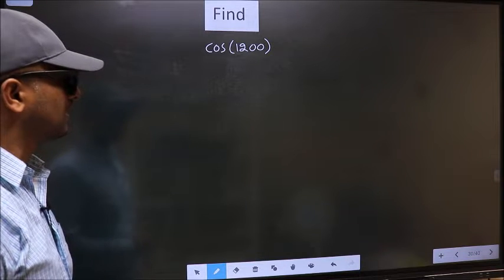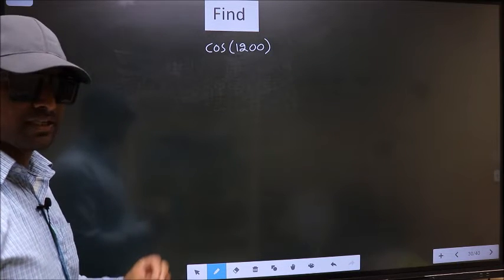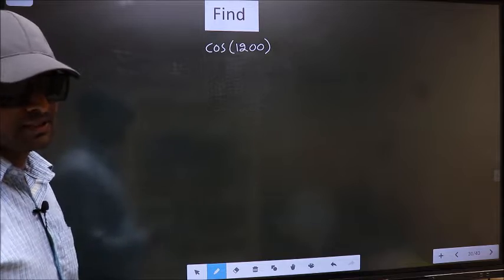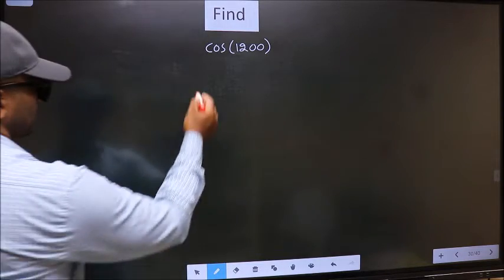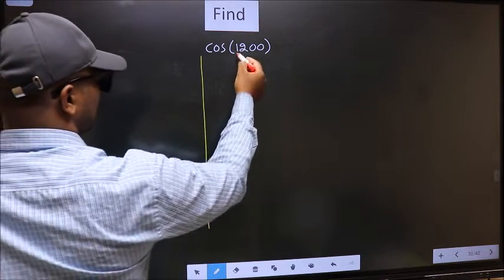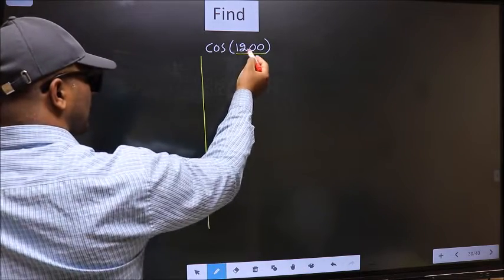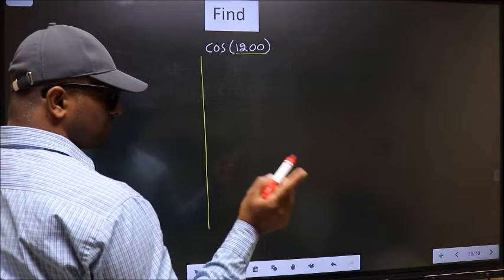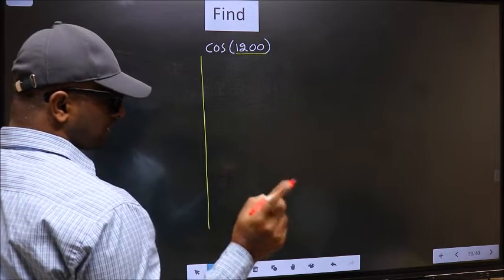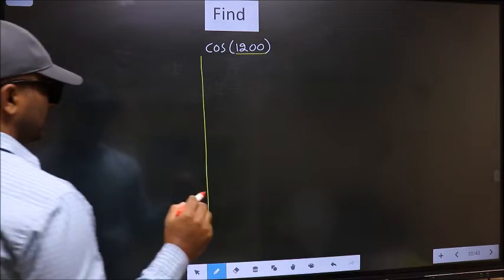Find cos(1200°). To find this, we should follow this method. See, here we have 1200. Now you should check: 1200 lies between which two multiples of 180? What I mean is...